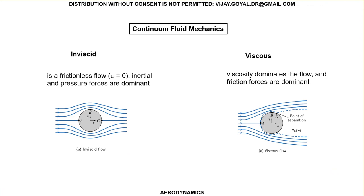In continuum fluid mechanics we have inviscid fluids and viscous fluids. An inviscid fluid is frictionless, so the flow is completely symmetric on both sides — taking the case of a sphere, you can see it's completely symmetric because there's no friction. Most practical flows we work with are viscous flows, where viscosity dominates and creates boundary layers. This causes points of separation and wakes that are generated.